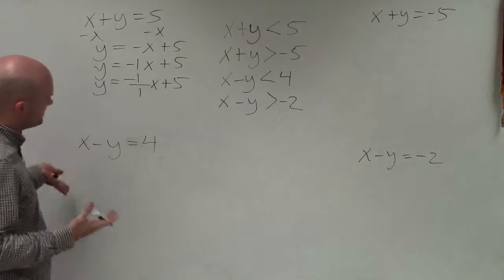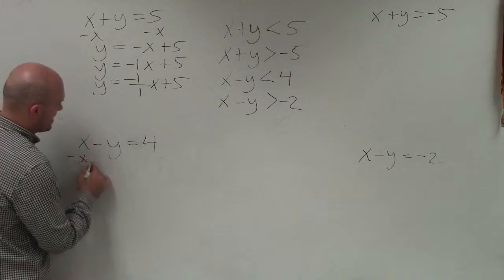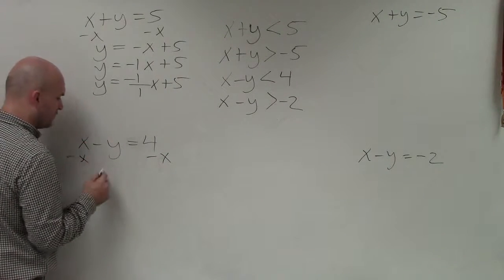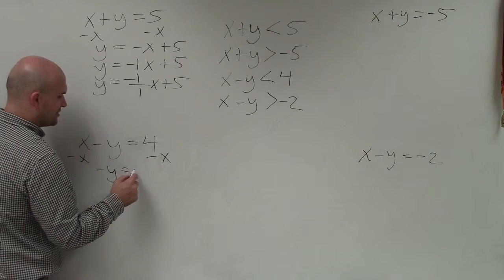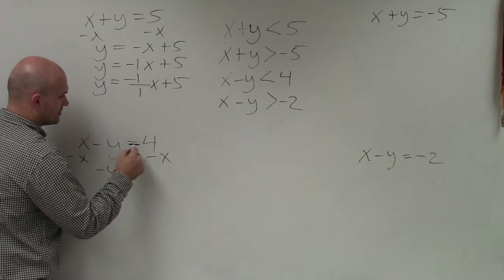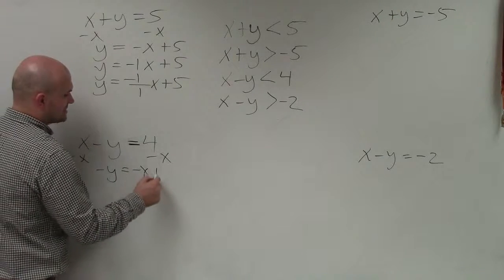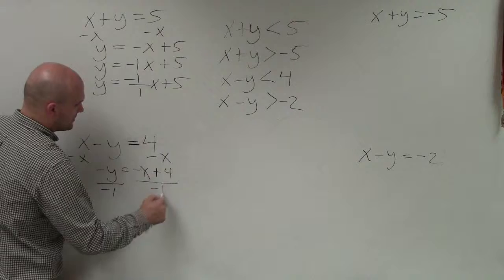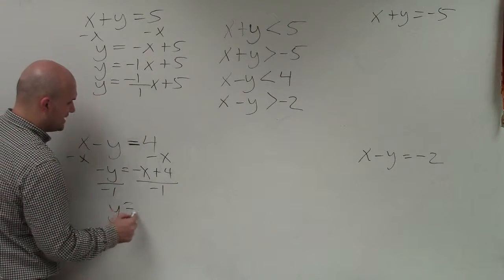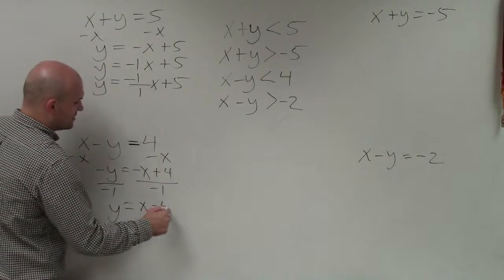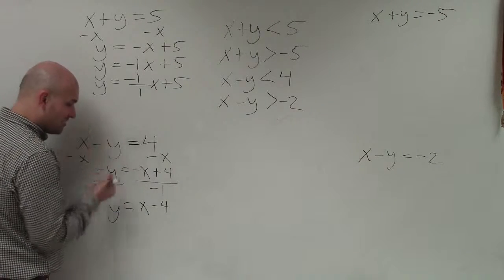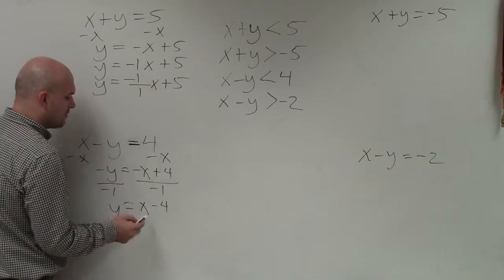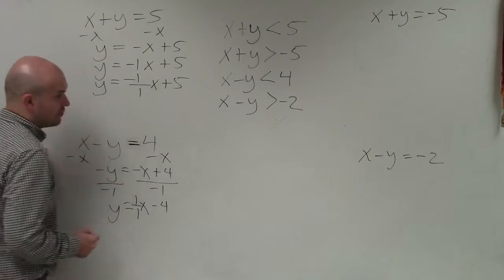For the second equation, I subtract x on both sides, giving negative y equals negative x plus 4. Then I divide both sides by negative 1, so y equals positive x minus 4. That's very important — the slope is 1 and I can rewrite it as 1 over 1, with a y-intercept of negative 4.